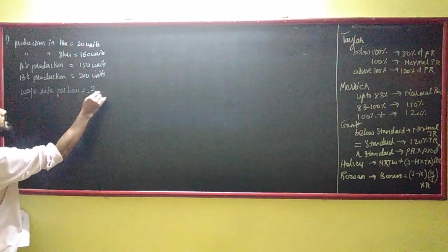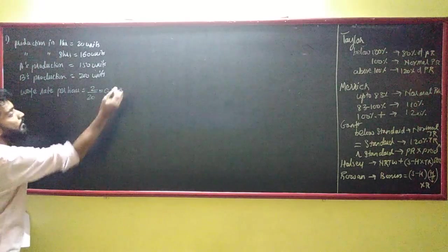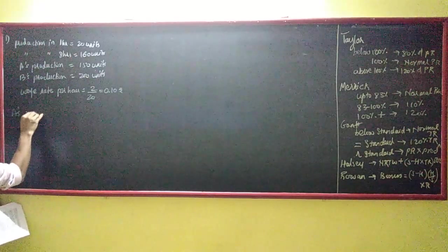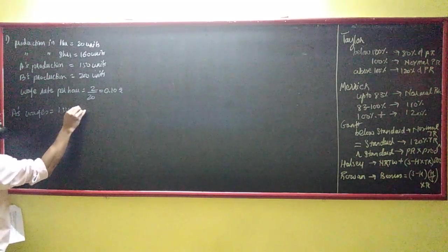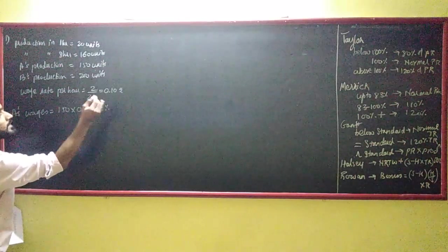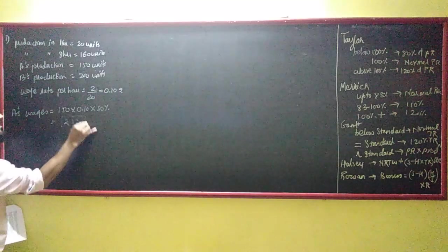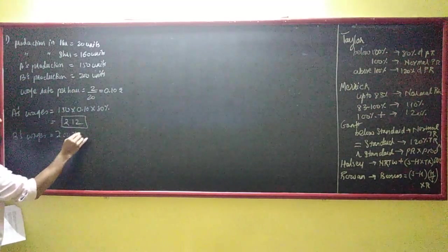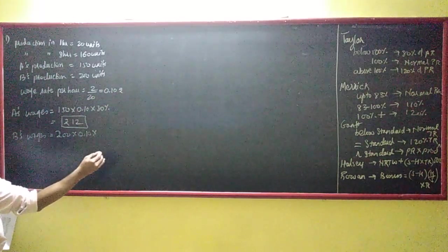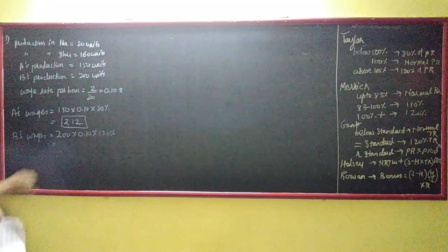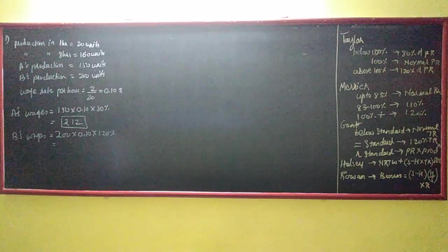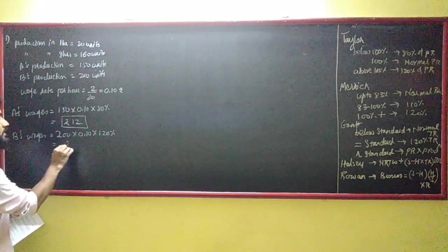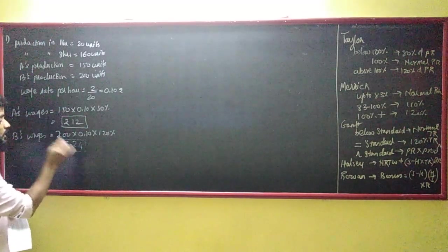The rate per unit is ₹2 divided by 20, which equals ₹0.10. Mr. A is at 80%, so his wages = 150 × 0.10 × 80%. Mr. B's wages = 200 × 0.10 × 120% = ₹24. You need not separately find the rate per unit when you calculate the wages — it comes directly from the formula.